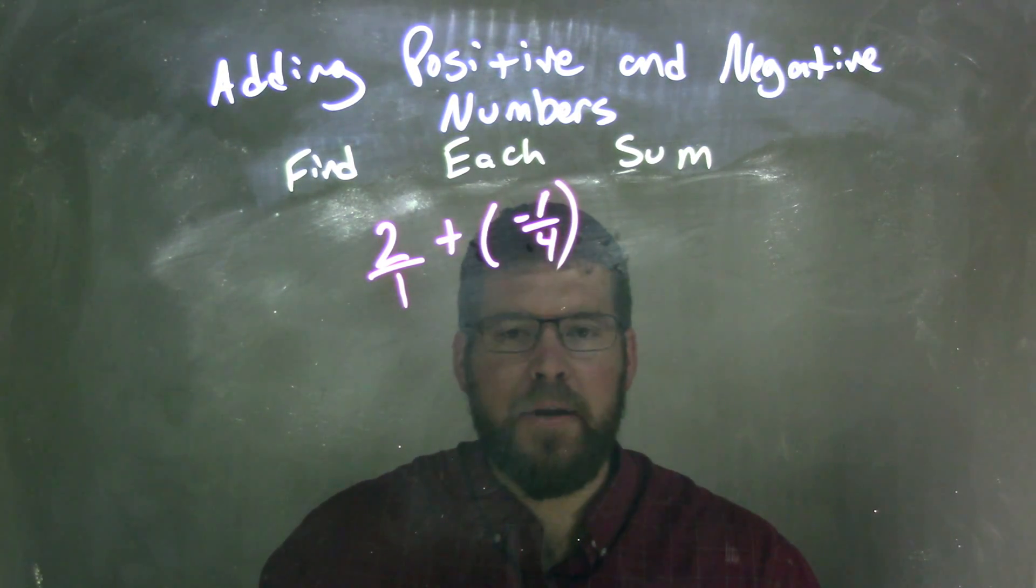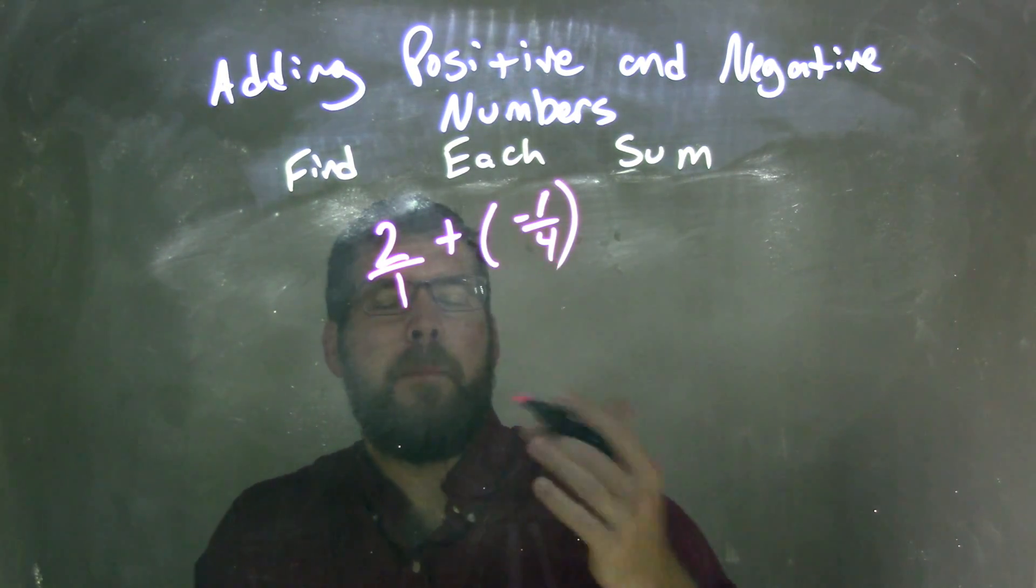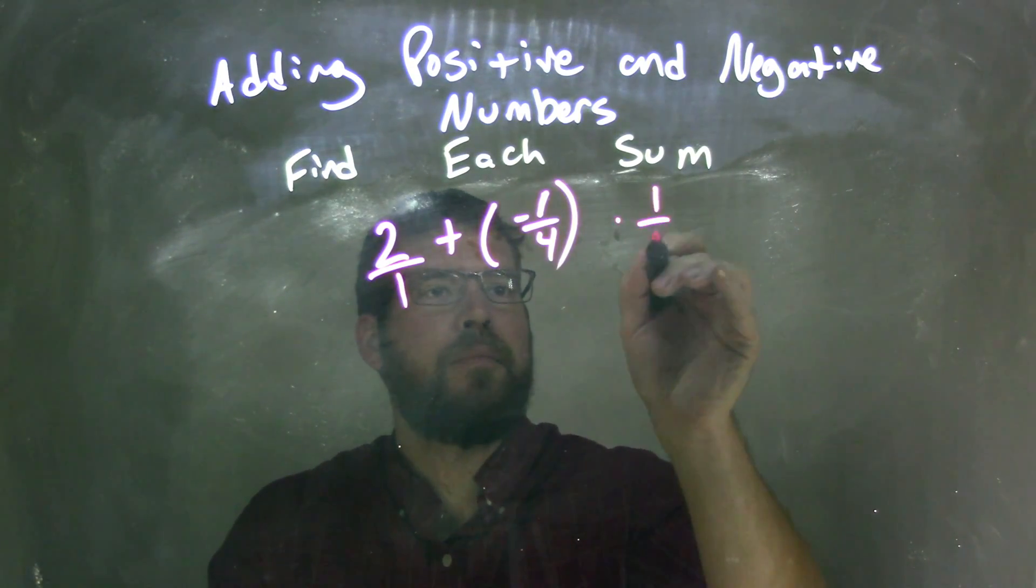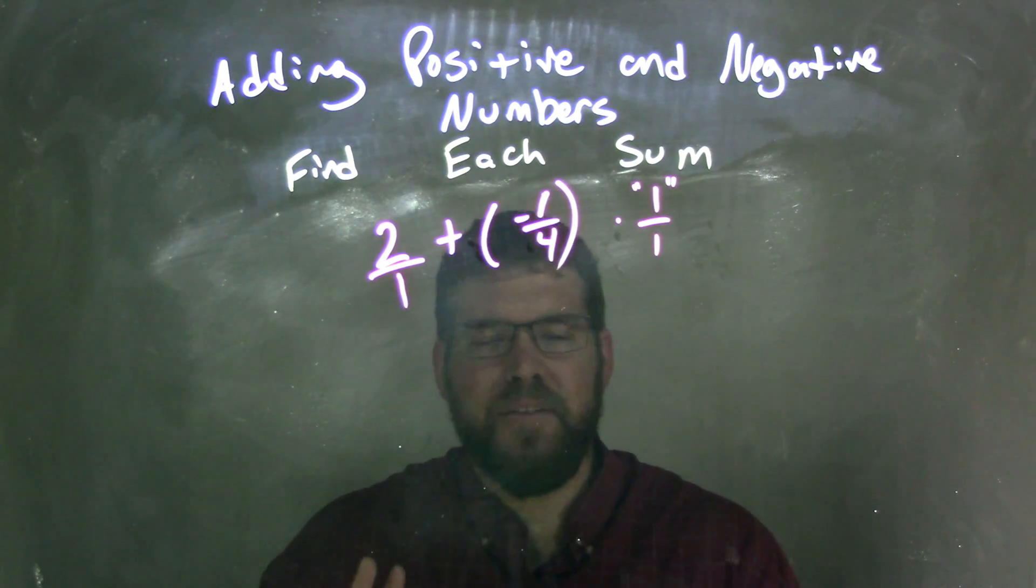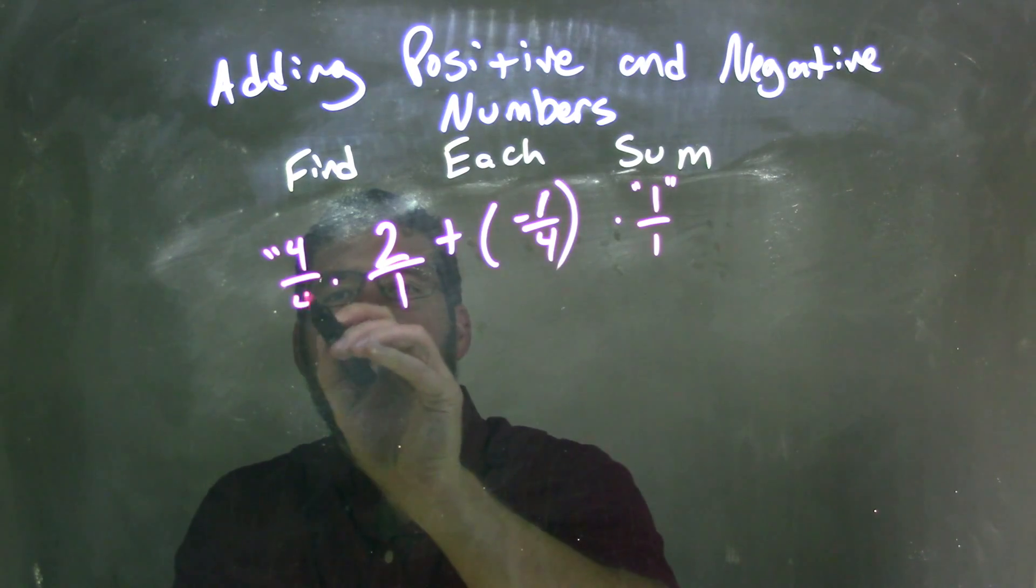Well, now I need to find the common denominator. Well, 1 and 4 both go into 4, 4 one time, so we multiply by 1 over 1, which is pretty silly, you don't really need to, it doesn't change anything. But the 2 over 1, I can multiply that by 4 over 4.